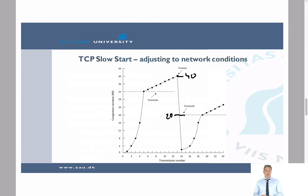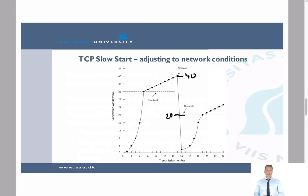We keep doubling until we reach the threshold value — in this case, 32. From there, we have linear growth until we reach a timeout, which typically occurs when we lose a packet. A timeout is treated as a sign of congestion, and we react accordingly.